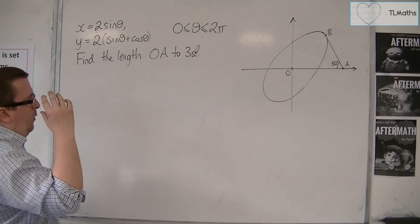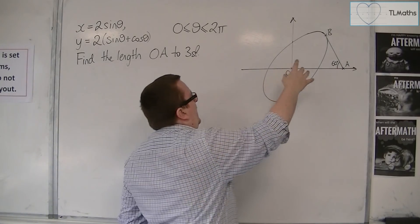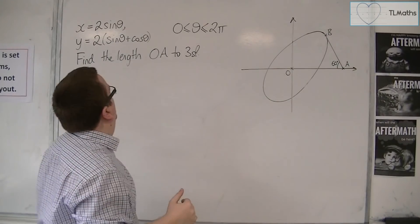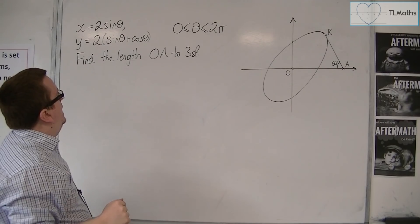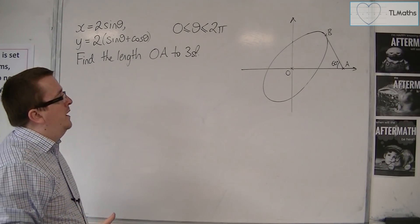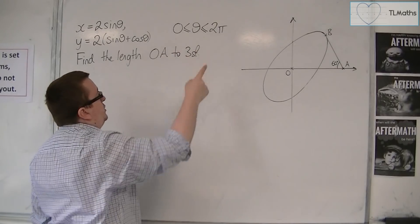We've got an ellipse-like shape with the equations x equals 2 sin theta and y equals 2 sin theta plus cos theta, where theta is running from 0 to 2 pi.